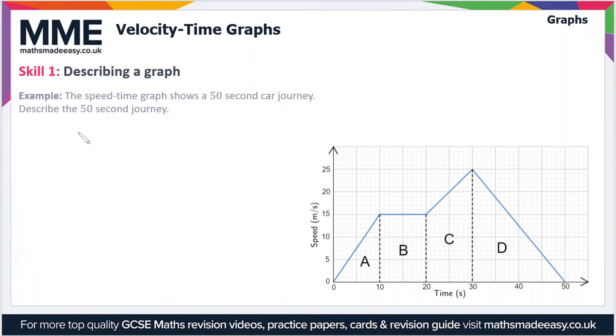Let's have a quick look at an example where we have to describe a graph. The speed-time graph shows a 50-second car journey. Describe the 50-second journey. Well, it's divided into four sections: A, B, C, and D, so we'll use those sections.